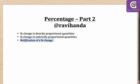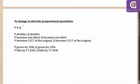To begin with, let's look at percentage change in directly proportional quantities. Suppose I am given two quantities P and Q which are directly proportional to each other. What it means is: if P doubles, Q doubles. If P becomes one-third of the original, Q also becomes one-third of the original.